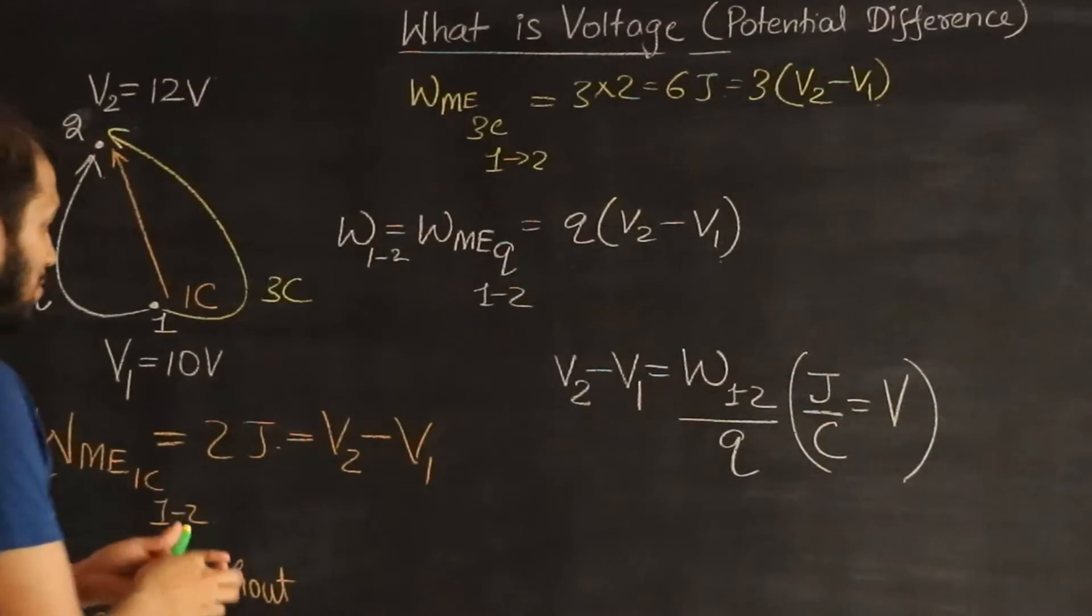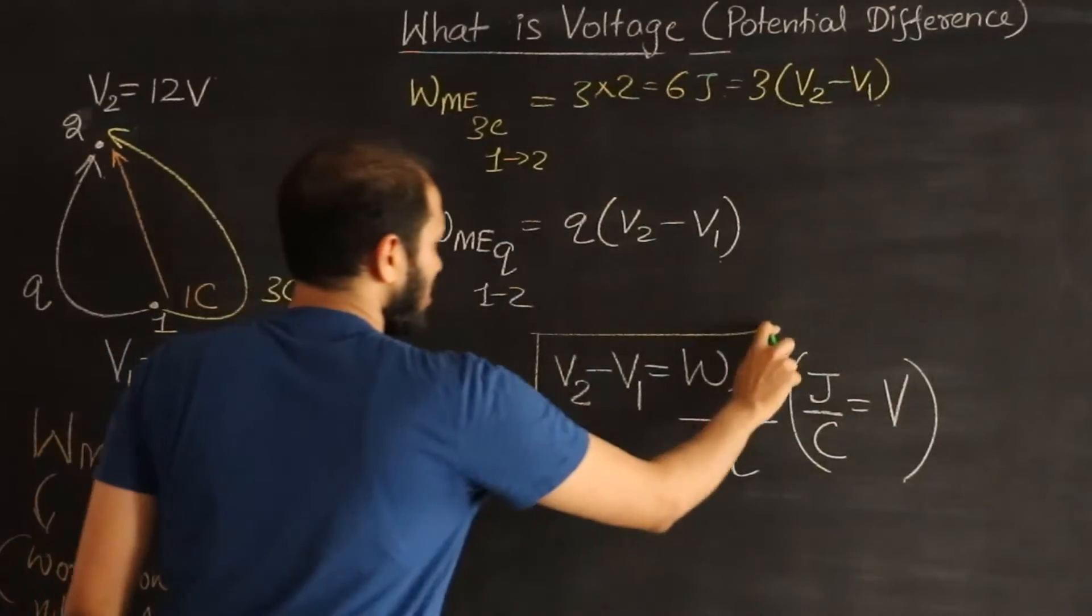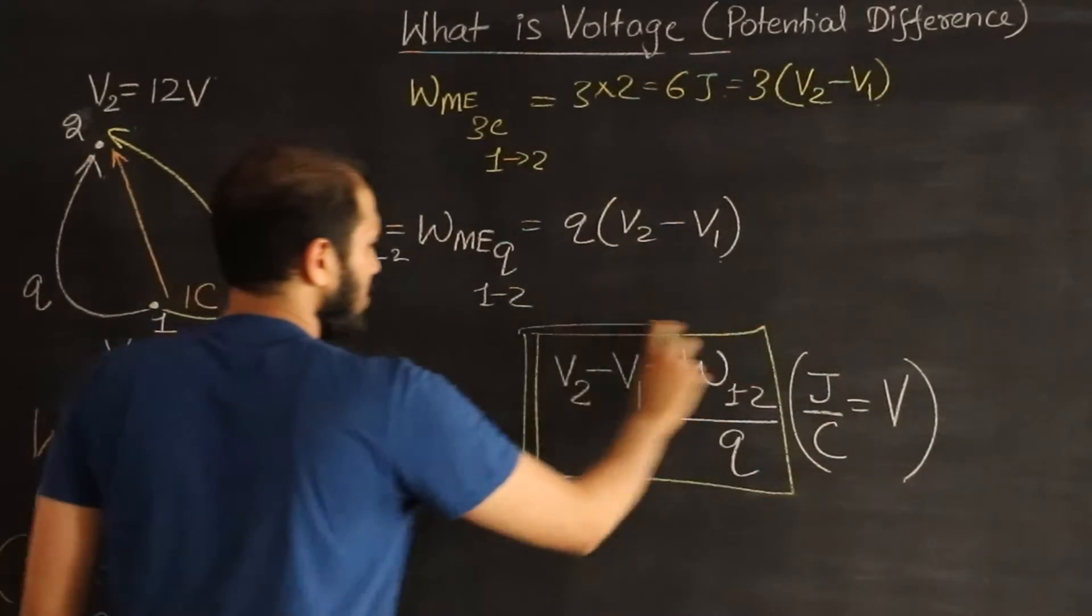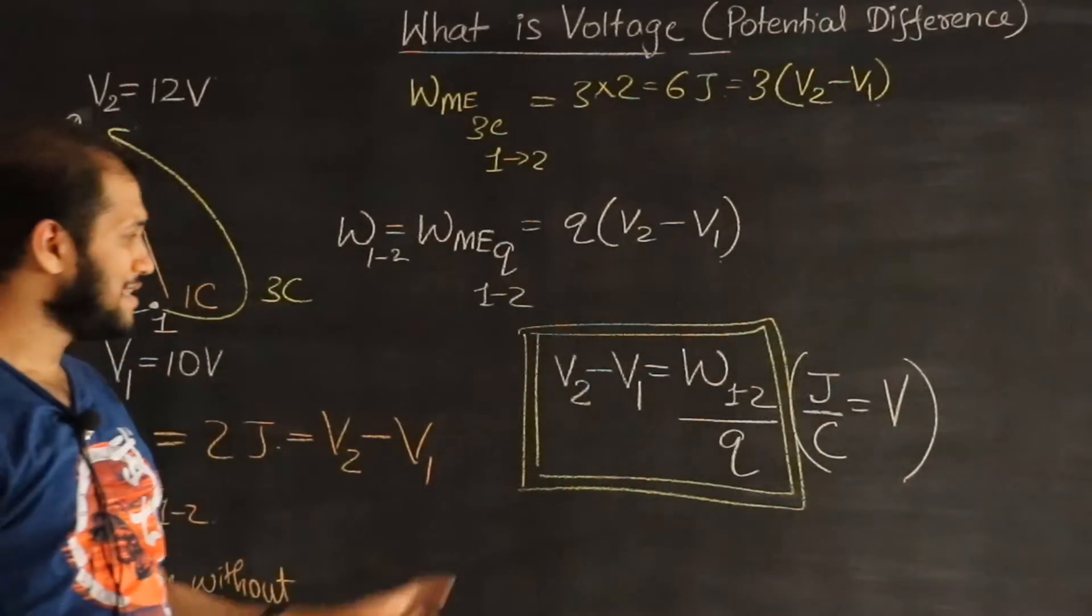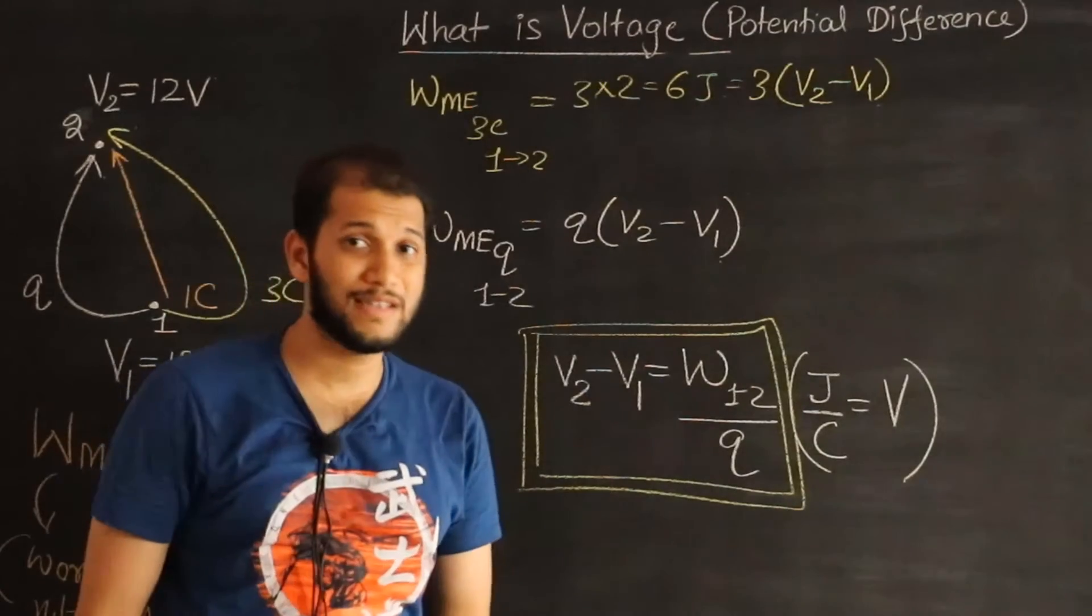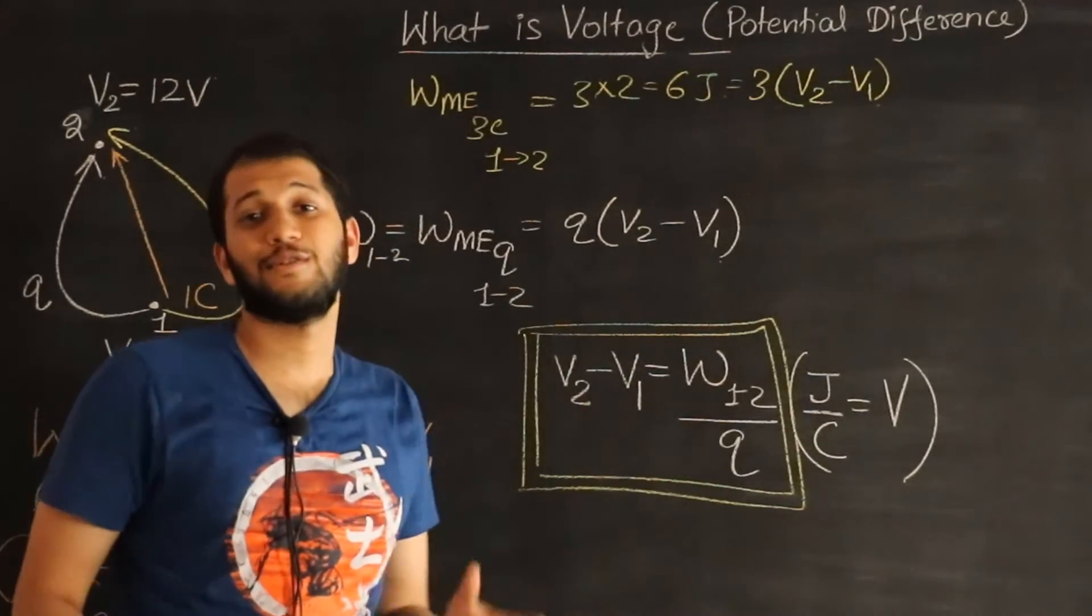Okay, so this is going to be our definition for potential difference. Notice one thing. Potential difference when we say in physics we always mean final minus the initial point, or final minus initial value.